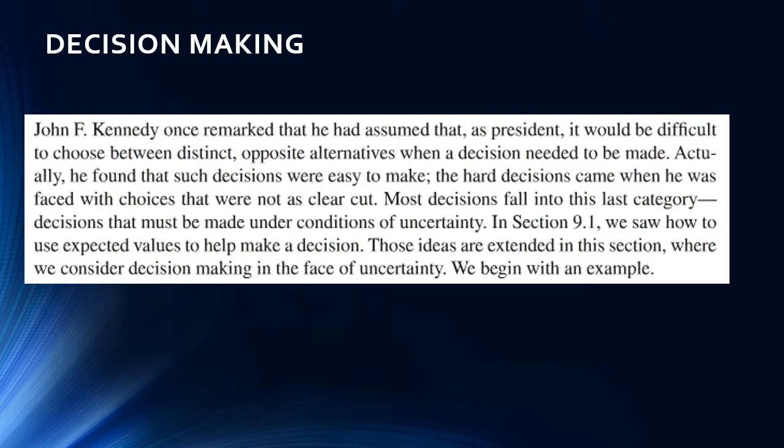Decision making. John F. Kennedy once remarked that he had assumed that, as president, it would be difficult to choose between distinct opposite alternatives when a decision needed to be made. Actually, he found that such decisions were easy to make. The hard decisions came when he was faced with choices that were not as clear cut. Most decisions fall into this last category — decisions that must be made under conditions of uncertainty.